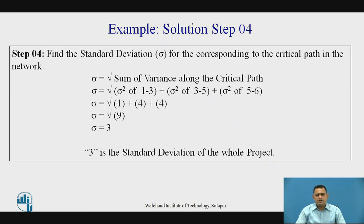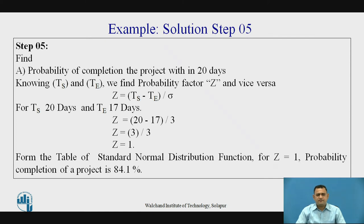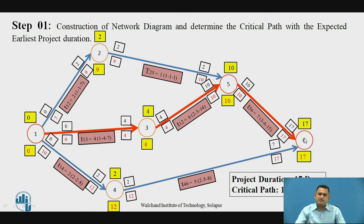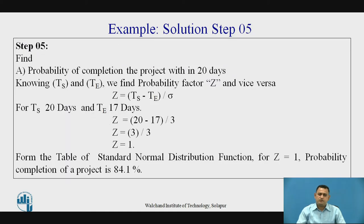We now have the variance and standard deviation for the project, which are needed for determining the probability completion time or scheduled completion time. Step 5: finding the answers. The first question asks for the probability of completion within 20 days. The project duration is 17 days, as seen in the network diagram. Using the normal deviate formula Z = (Ts - Te) / sigma, we can find the value.